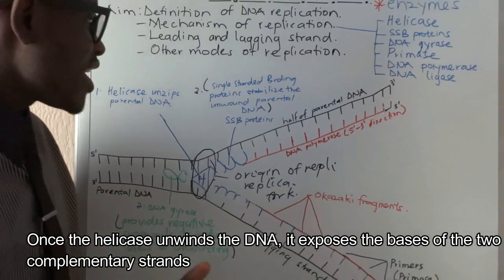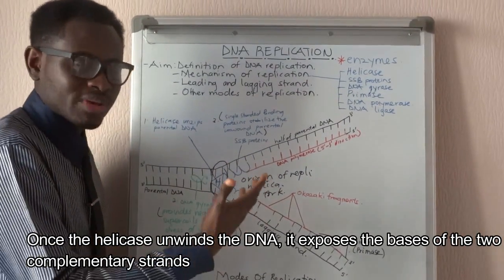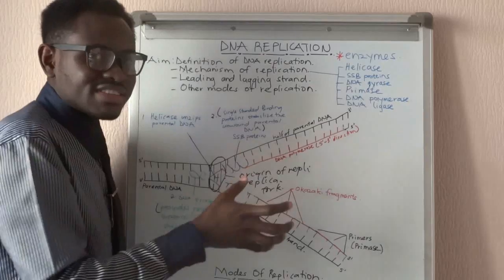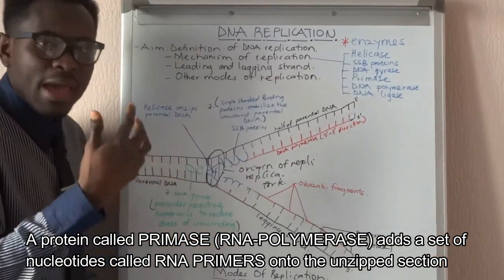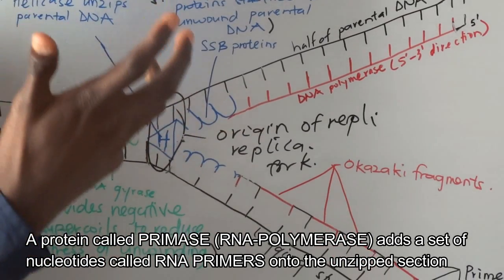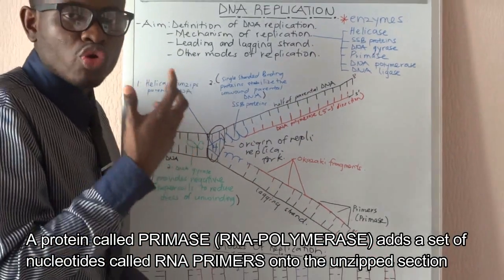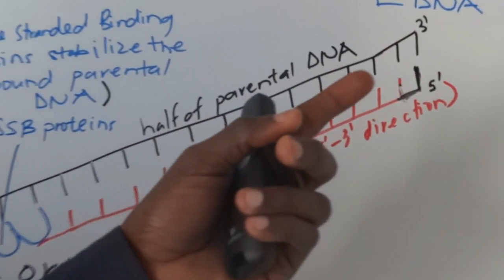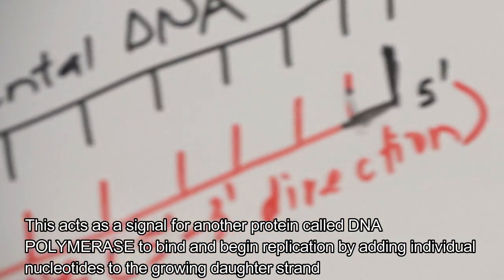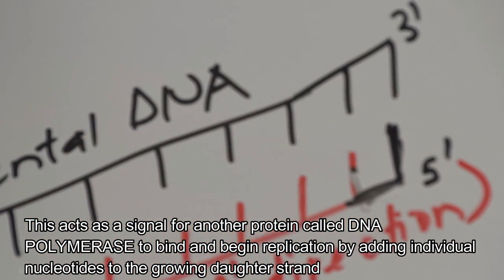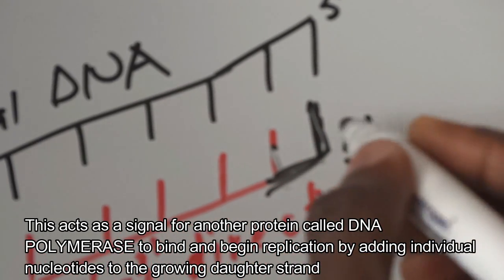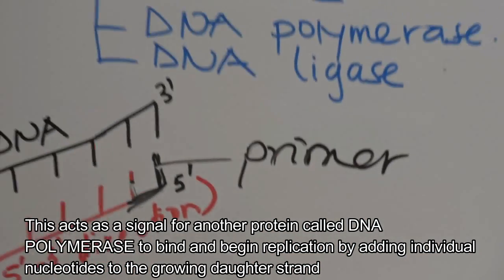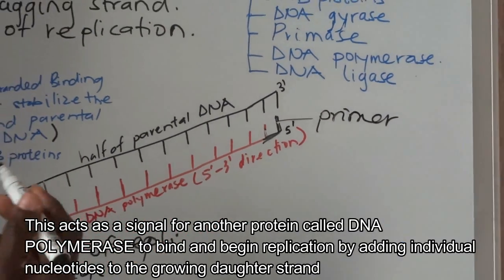The next step is how DNA is now replicated on each strand. We have an enzyme called primase. Primase introduces a set of nucleotides called a primer. This primer sets the whole replication in motion on the strand, preparing the way for DNA polymerase to begin synthesis.